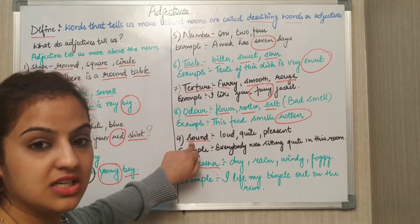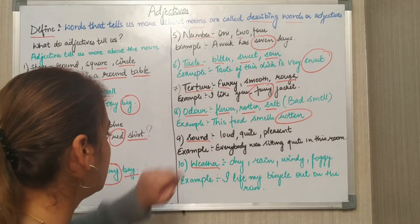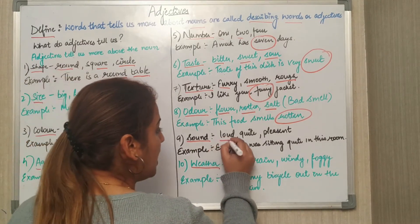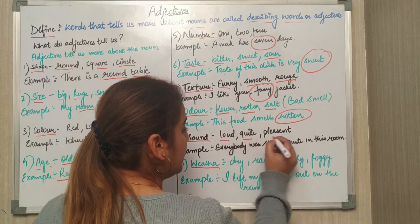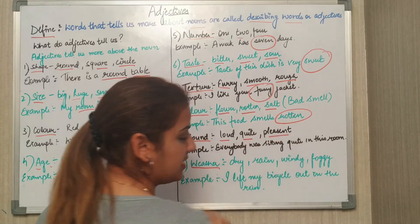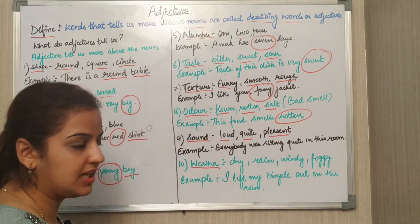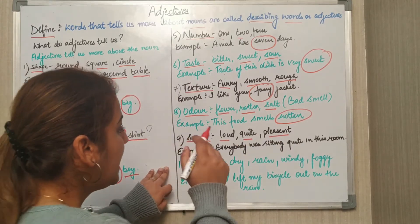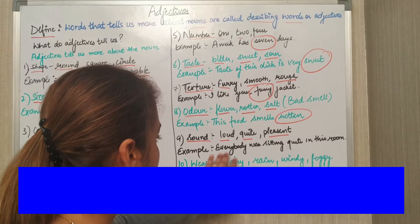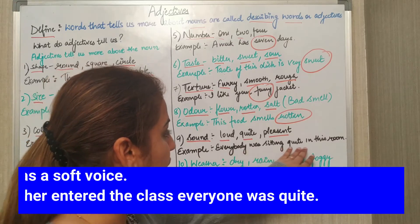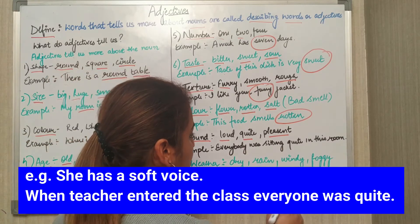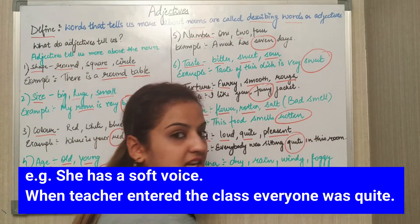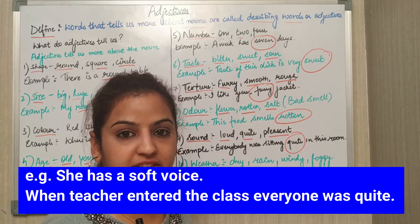Next comes sound. Sound could be any — loud, quiet, or pleasant. Example: Everybody was sitting quiet in this room. Now 'quiet' here is an adjective.